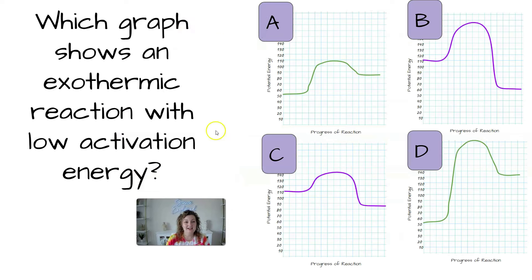Okay, let's go ahead and look at a sample problem now. Which graph shows an exothermic reaction with a low activation energy? This is really asking you two things at the same time. Let's start with the first one. Which one's exothermic? We can narrow it down.